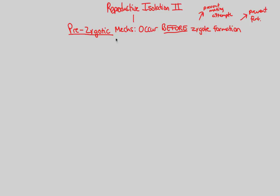Let's finish off the prezygotic mechanisms. We completed one through three, and we're now going to continue that discussion by looking at number four, which we'll call mechanical isolation.